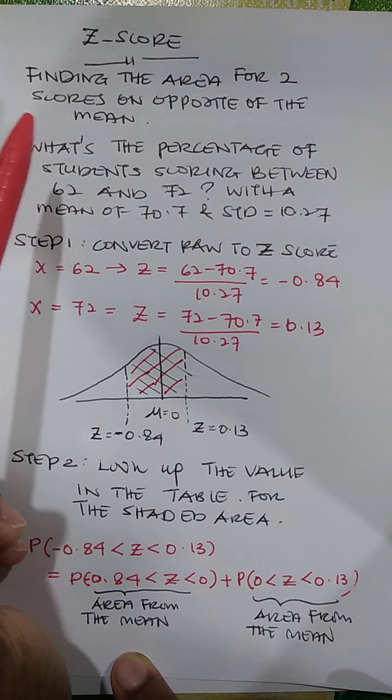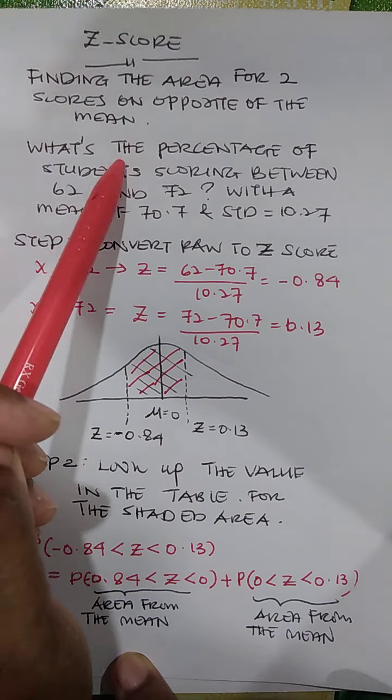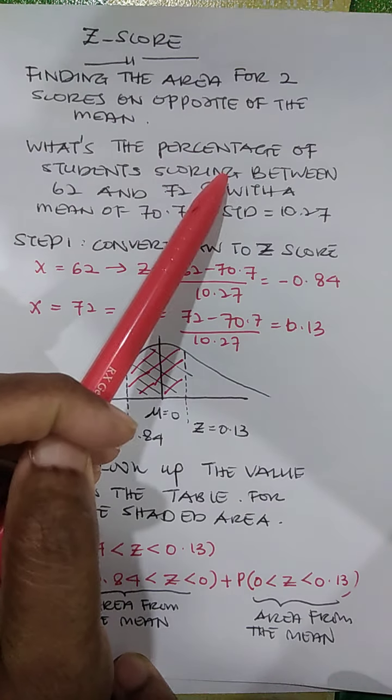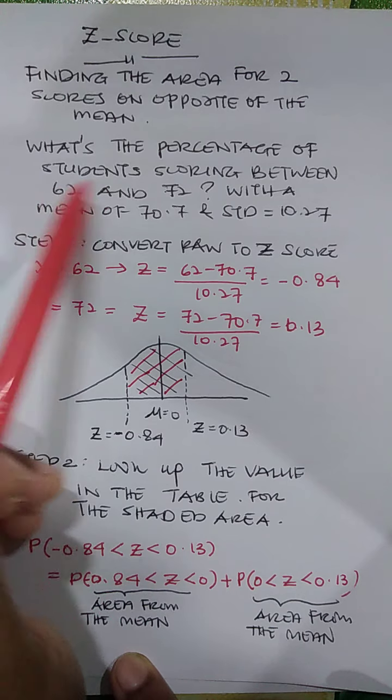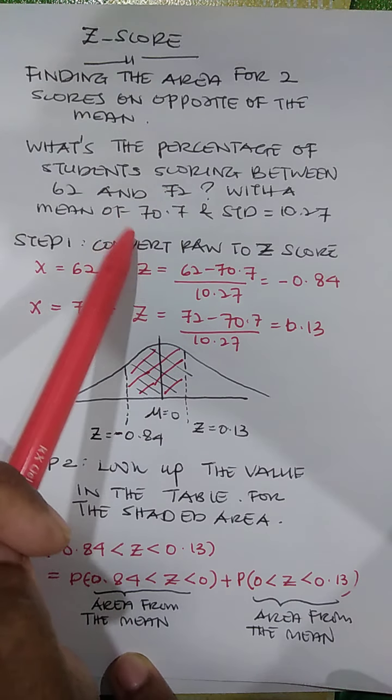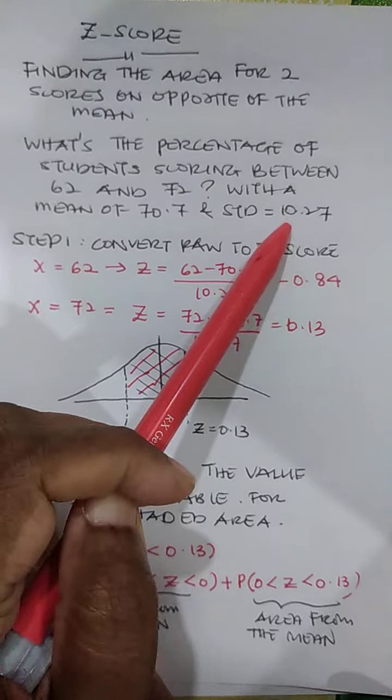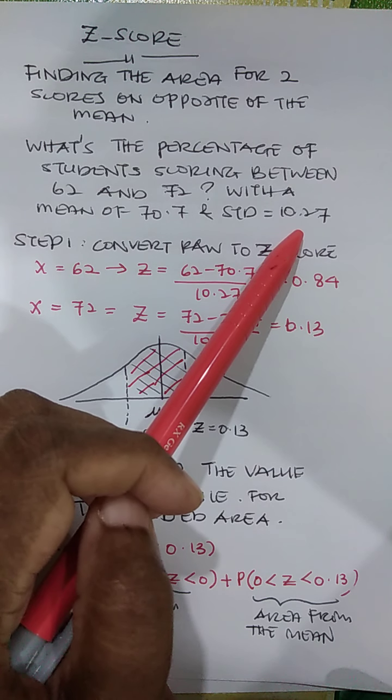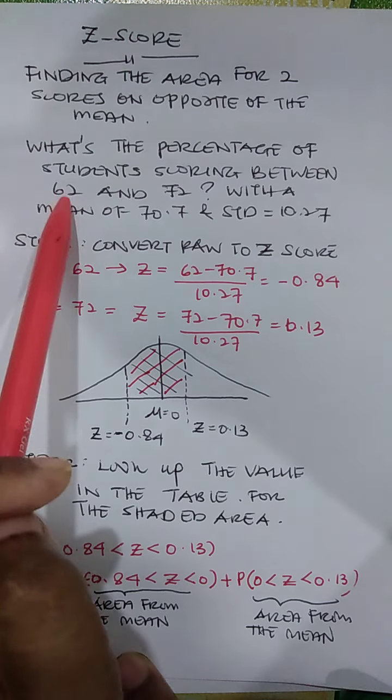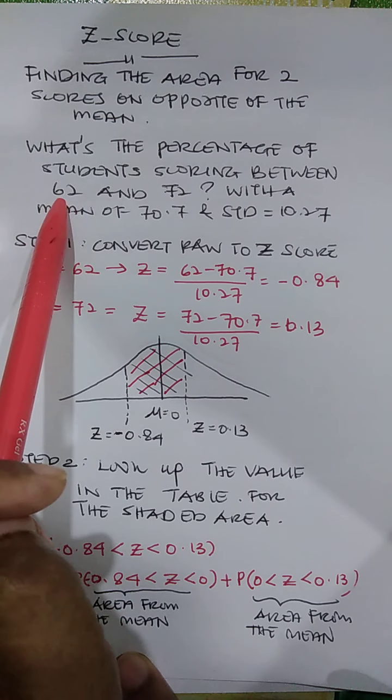The example is what is the percentage of student scoring between 62 and 72 given the mean of 70.7 and standard deviation of 10.27. In this case, one of the value is below the mean.